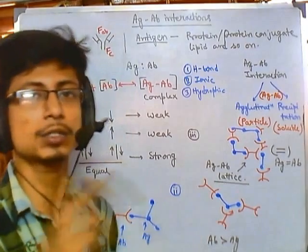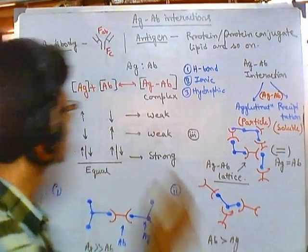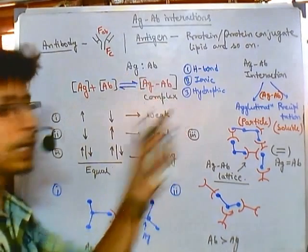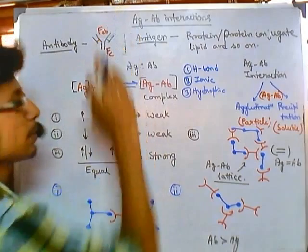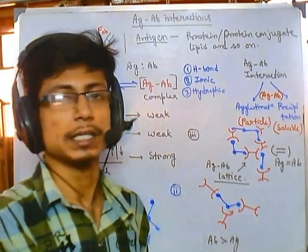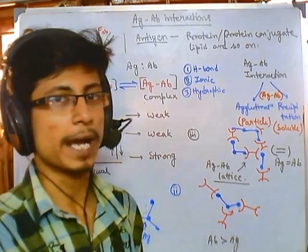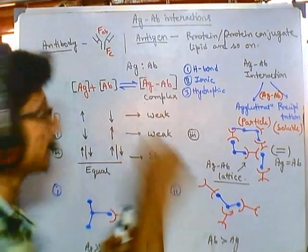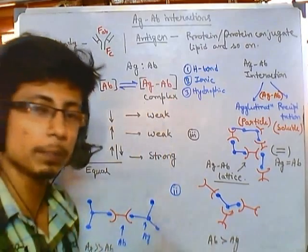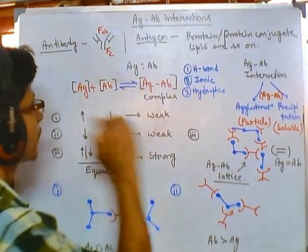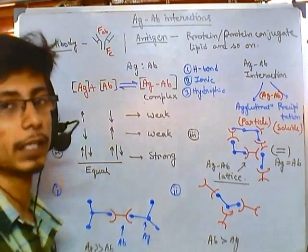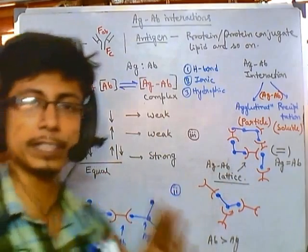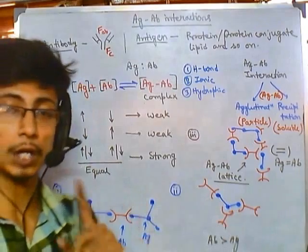This also tells us another truth about the antigen-antibody complex: it is reversible. Remember, this reaction is reversible in nature. If the antigen-antibody interaction were covalent, this would not be possible — they could not go back from complex to free antigen and antibody. But we know the antigen-antibody complex can be broken down again into antigen and antibody, which is possible precisely because they have non-covalent interactions.